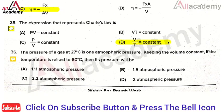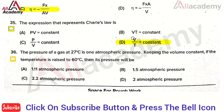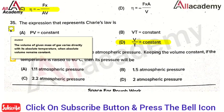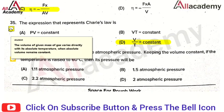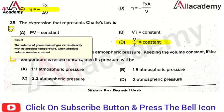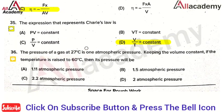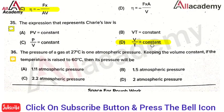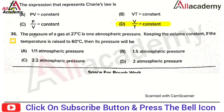The next question: the expression that represents Charles' Law — the right answer is option 4, that is V/T = constant, where V is volume and T is temperature. According to Charles' Law, the volume of a given mass of gas varies directly with its absolute temperature when pressure is kept constant. From this definition, the relation V/T equals constant can be formed.